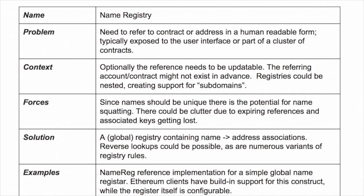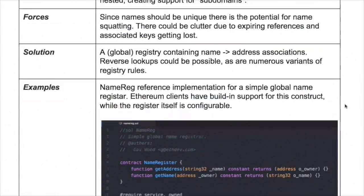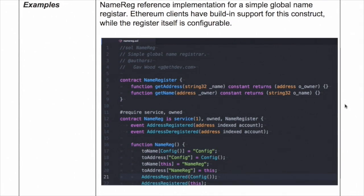A great example is the NameReg itself — the reference implementation for a global name registry. Most Ethereum clients have support for this API. You can configure it in the clients, and once set you can use it for all kinds of name lookups. When Mist, the Dapp browser, comes out this will become much more important — you'll be able to register the name of your Dapp and just type in the name to look up the relevant contracts. Typically there's a way to register a name, get an address given a name, or get a name given an address — a very straightforward but very useful API.